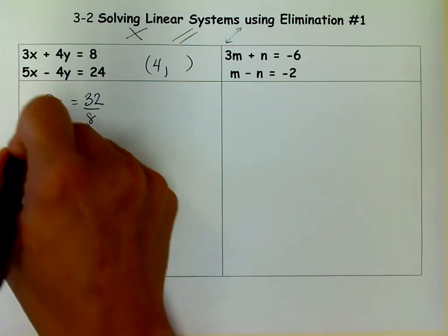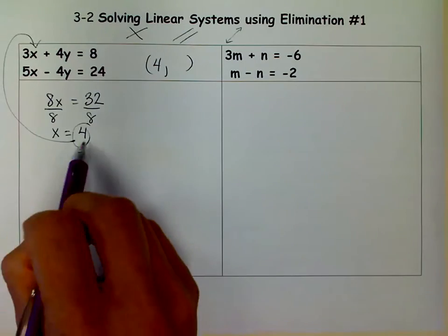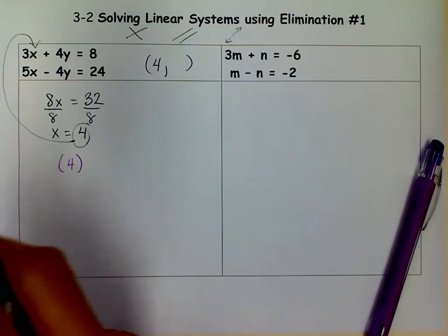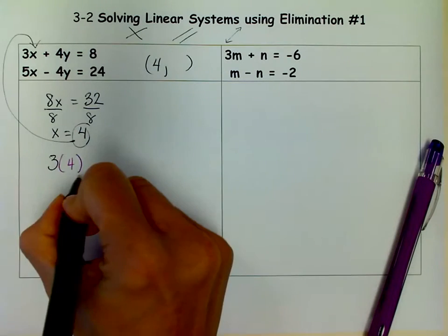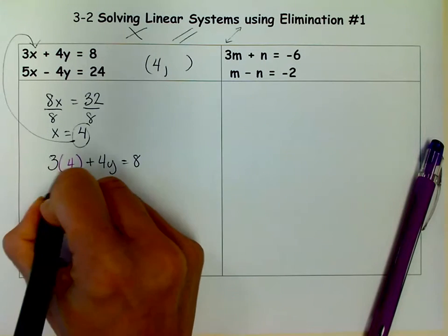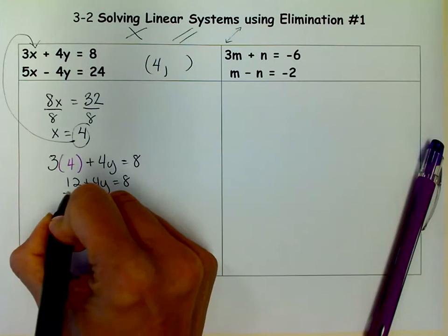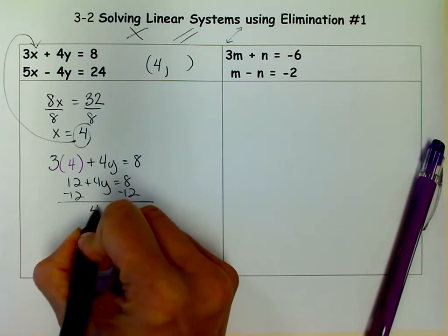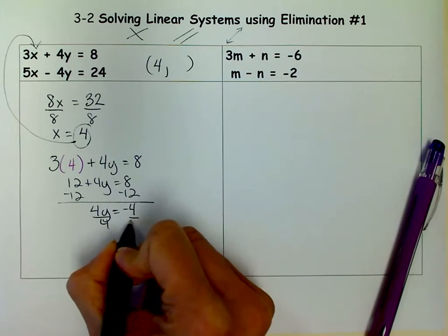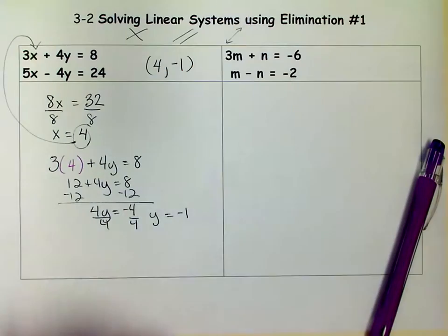So then I use substitution to find my y value. So I take my 4 and I plug it back in to that x. So I'm going to have a 4 instead of that x in that first equation. So I'm going to say 3 times 4 plus 4y equals 8. And when I do that, I get 12 plus 4y equals 8. I minus 12 from both sides, I get 4y equals negative 4. And when I divide both sides by 4, I get y equals negative 1. Now I have my y-coordinate.